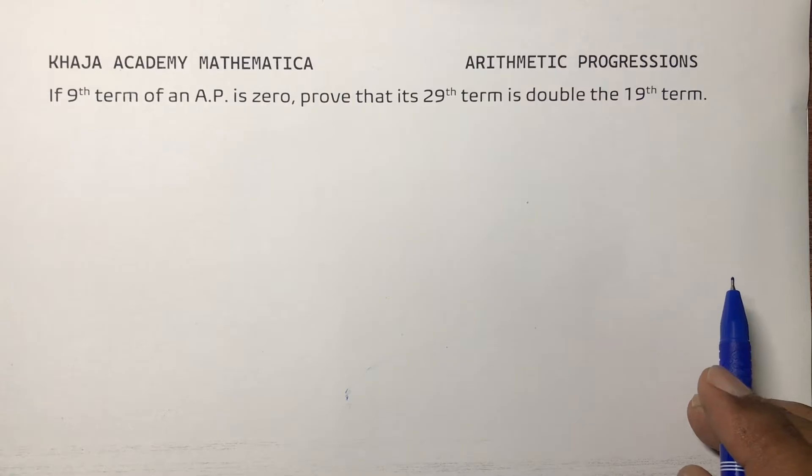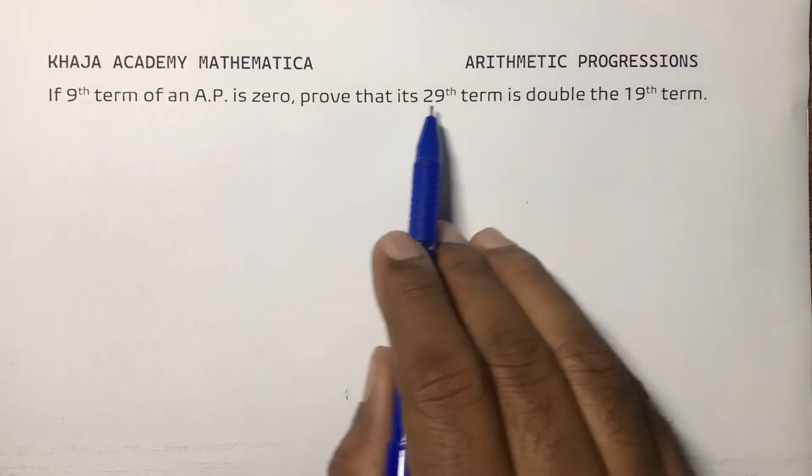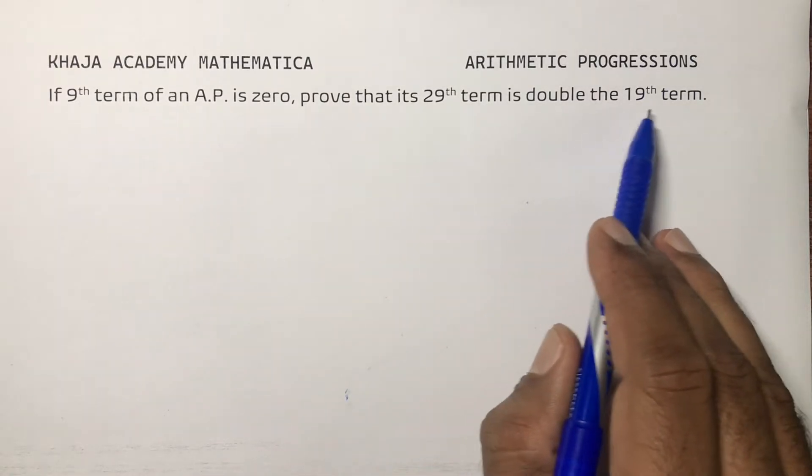If 9th term of an AP is 0, prove that 29th term is double the 19th term.